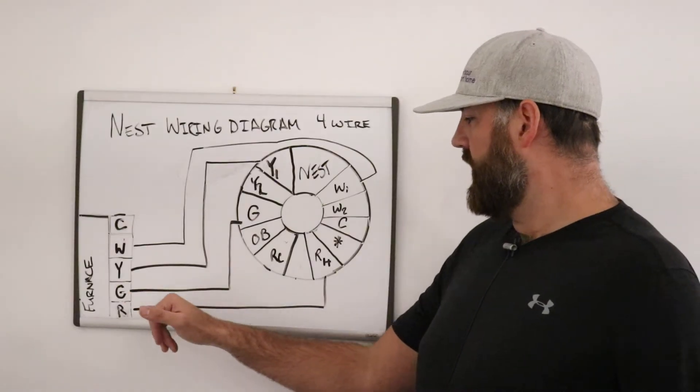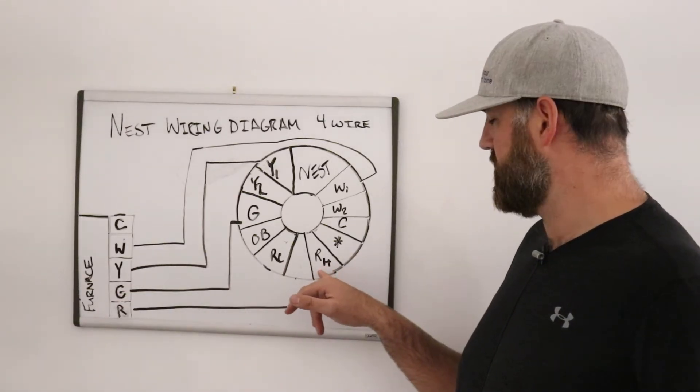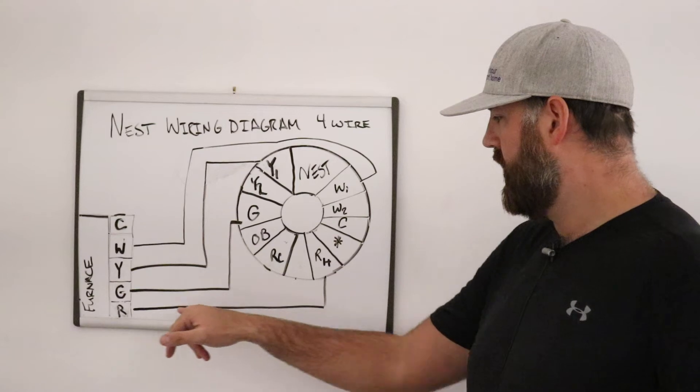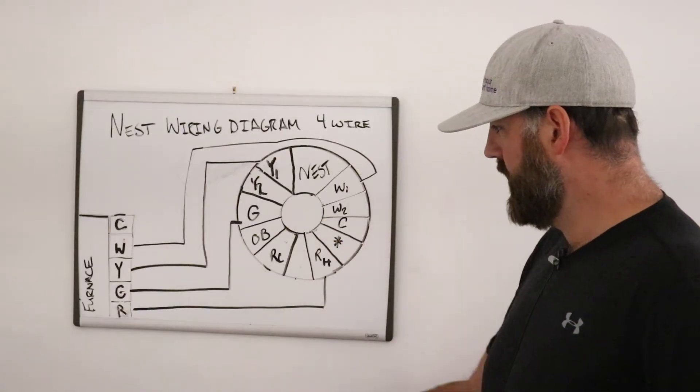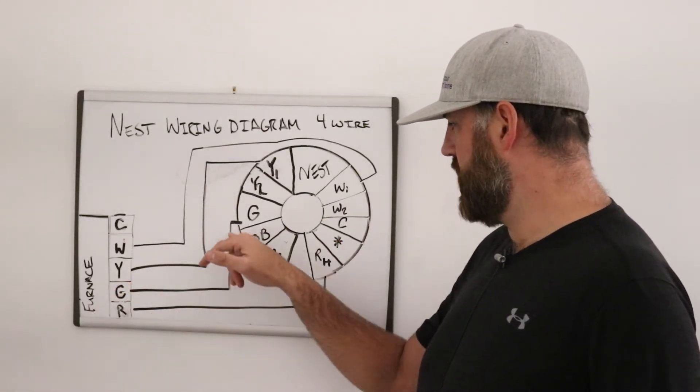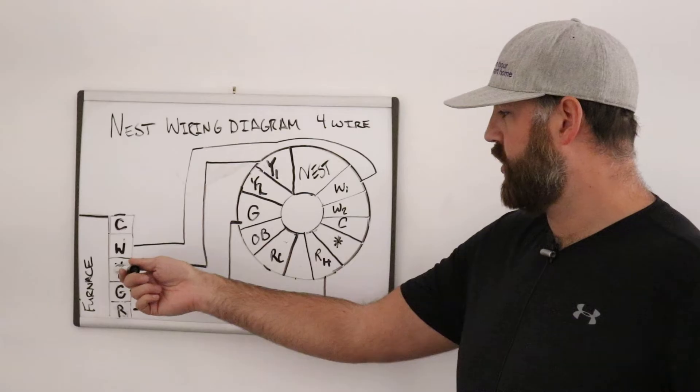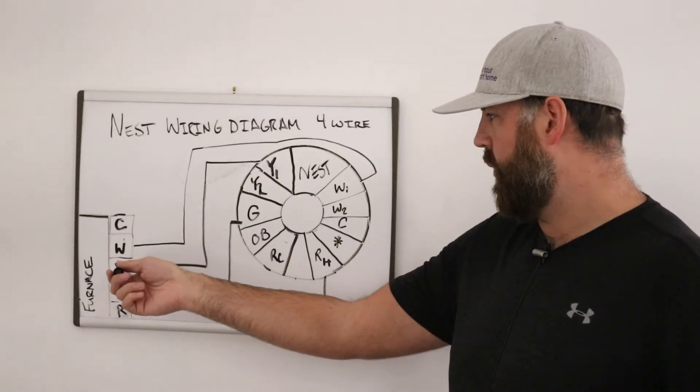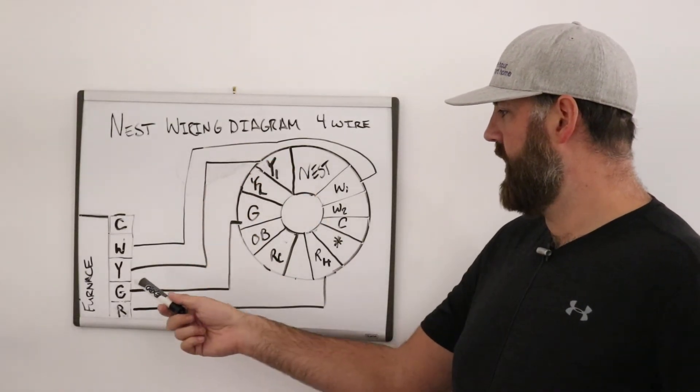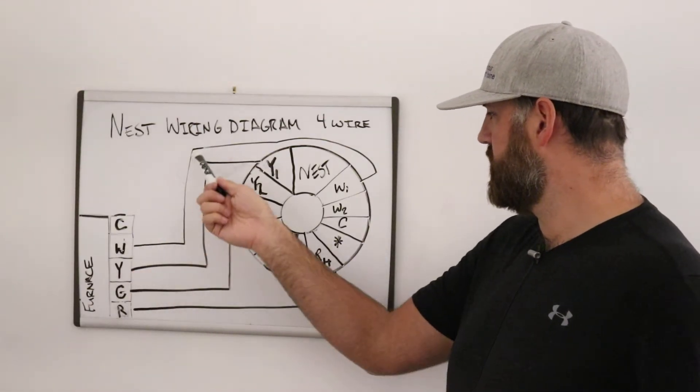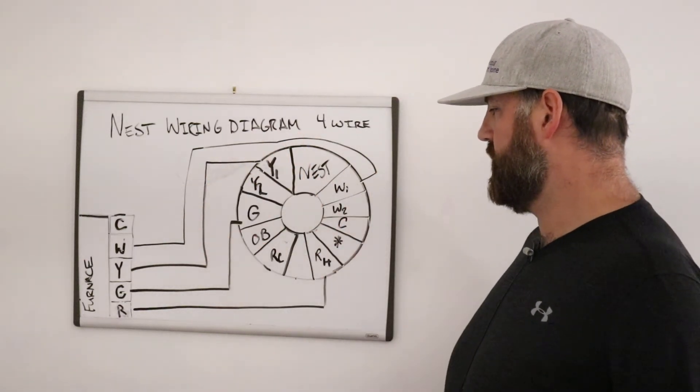So what you have to do is connect your R wire, or red wire, to RH on the Nest. R to R, red to red, which is power, which powers the whole thermostat. G, which would be your green wire, G to G, which is your fan wire. Y, which is your cooling wire, goes from Y to Y1, which should be a yellow wire. W is your white wire, which will go from W to W1, and then that is your four wires that connect to your thermostat.